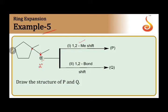On the next carbon, we can see that there is a methyl group. This methyl, along with its electron pair, shifts to the adjacent carbon. Let's draw the structure.